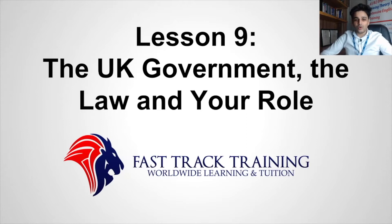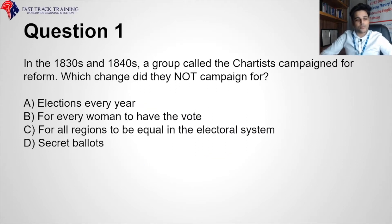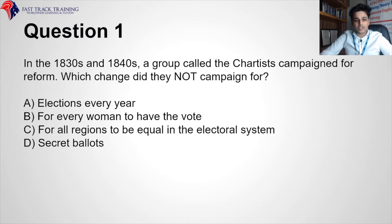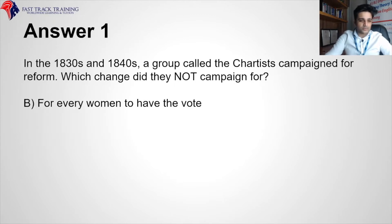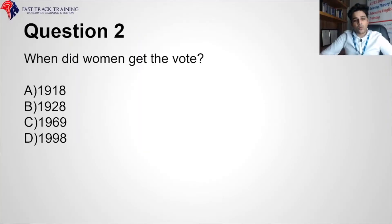Question 1: In the 1830s and 1840s, a group called the Chartists campaigned for reform. Which change did they NOT campaign for? A) Elections every year, B) For every woman to have the vote, C) For all regions to be equal in the electoral system, or D) Secret ballots. The correct answer is B — for every woman to have the vote. Question 2: When did women get the vote? 1918, 1928, 1969, or 1998?